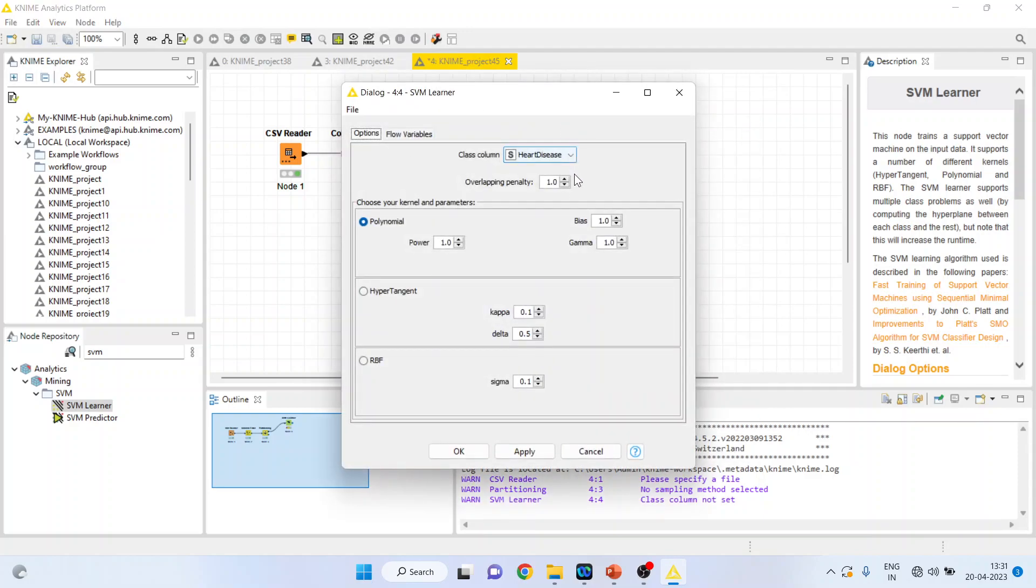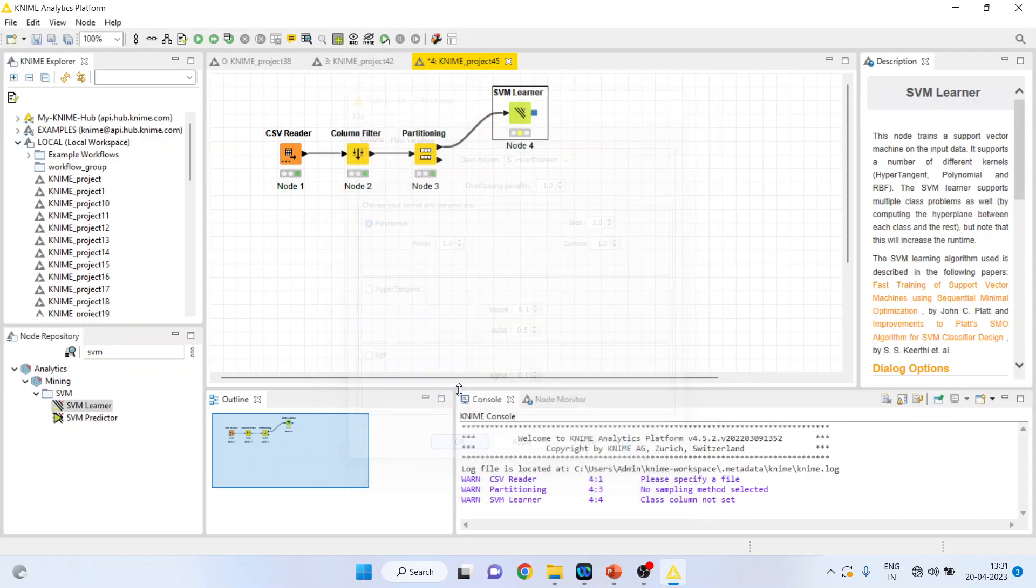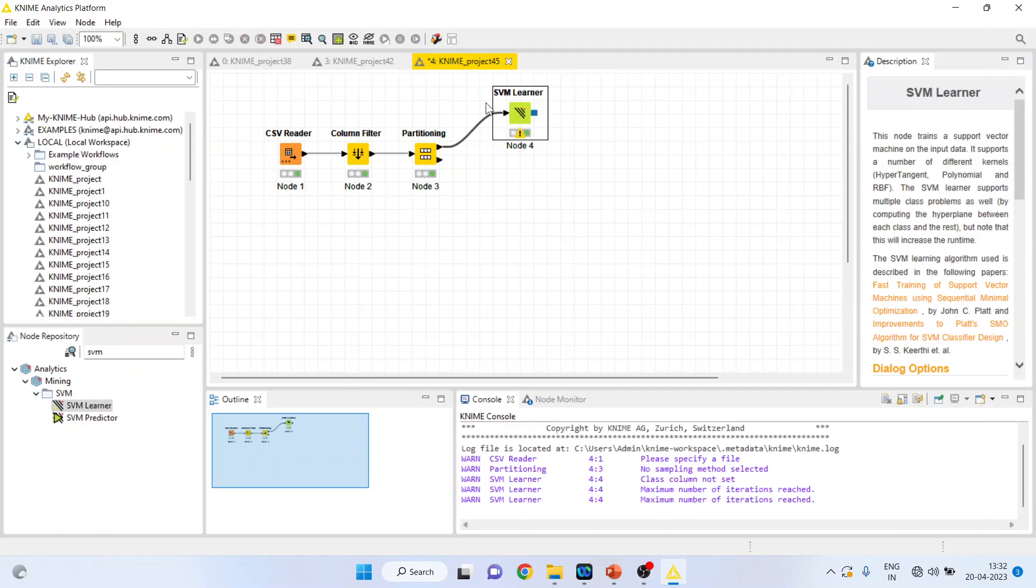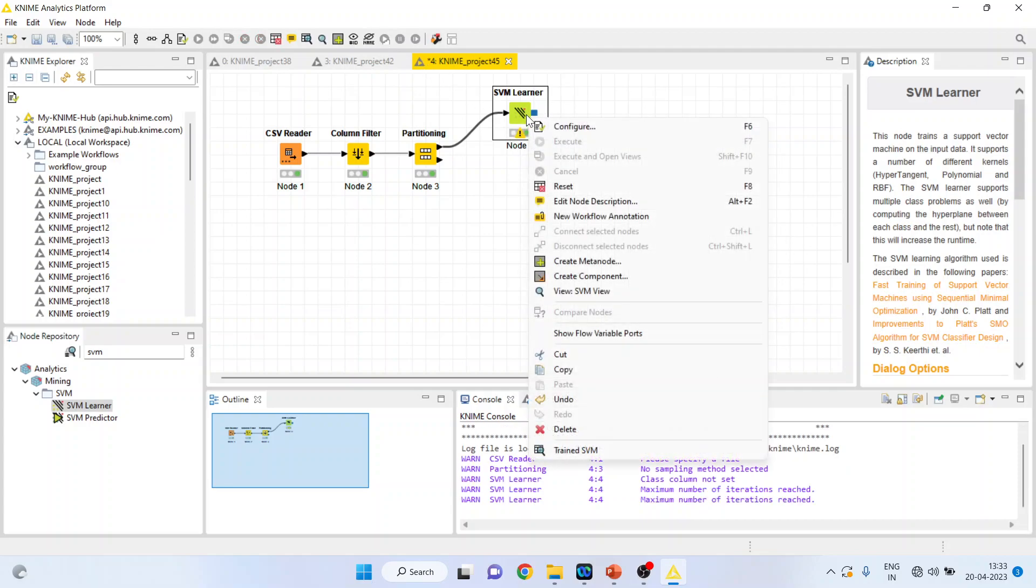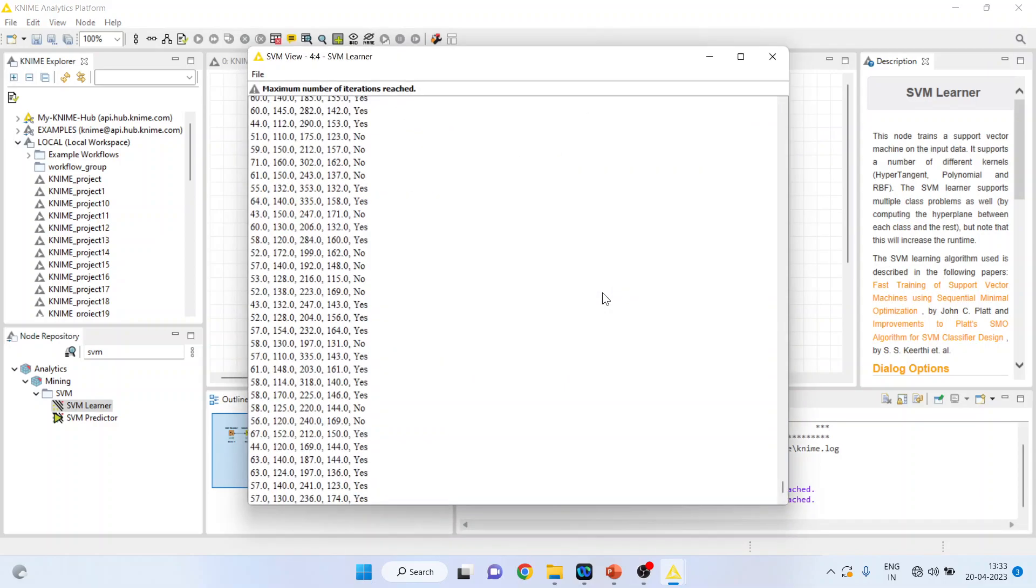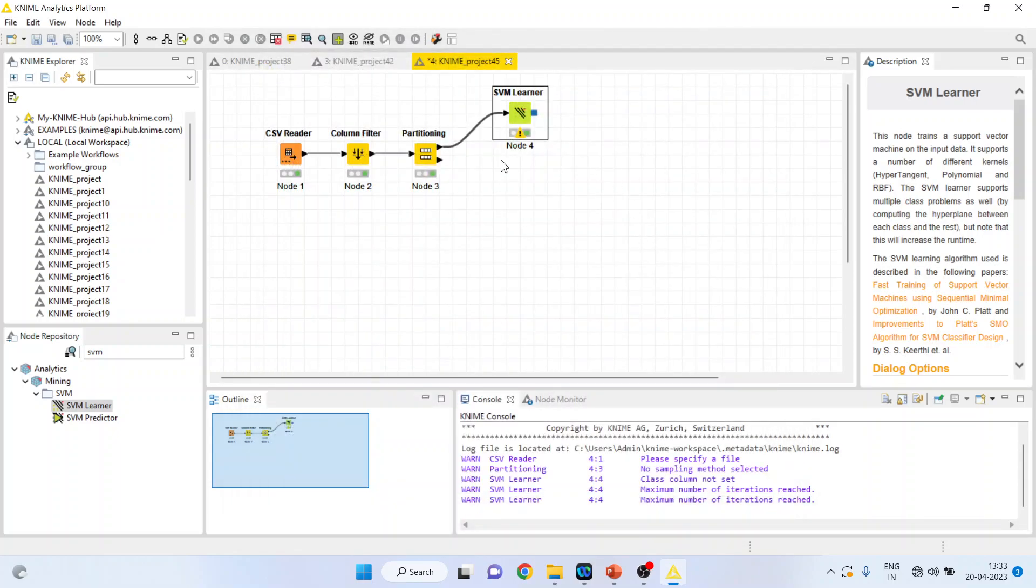Now execute. Wait a minute. Configure. Heart disease. OK. Right-click on it and execute. It will take some time. Now right-click on it and view SVM view. Support vector machine does not create any equation just like linear regression or logistic regression.